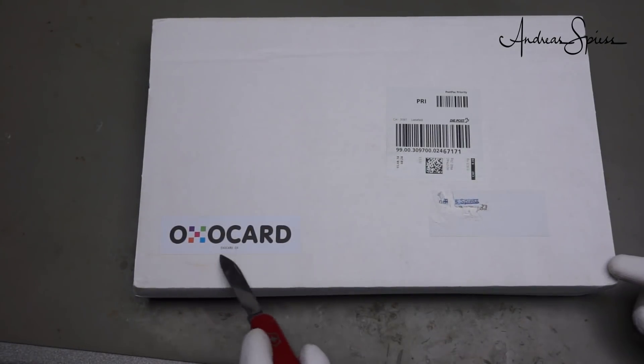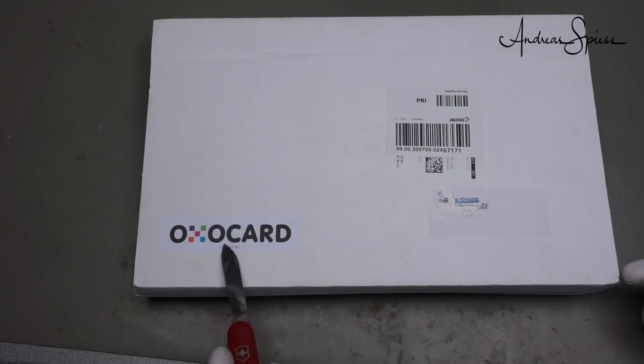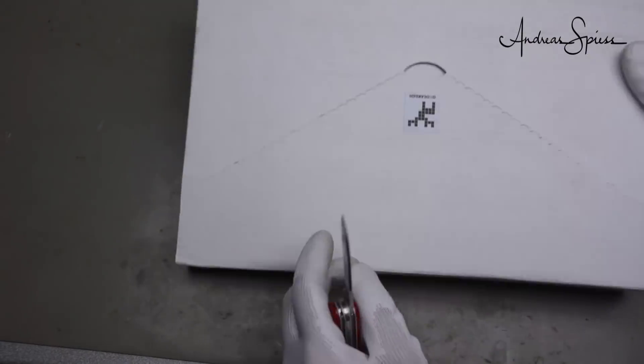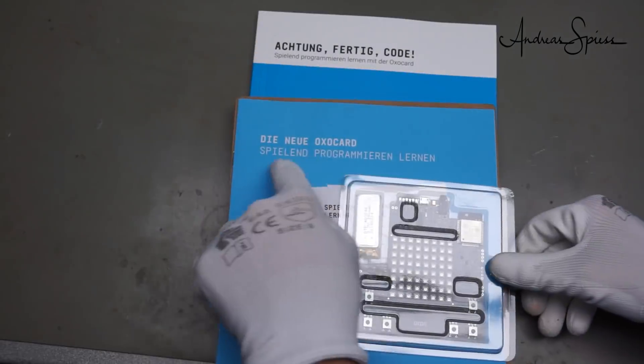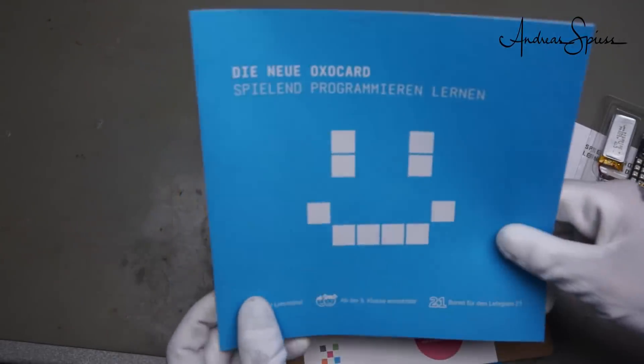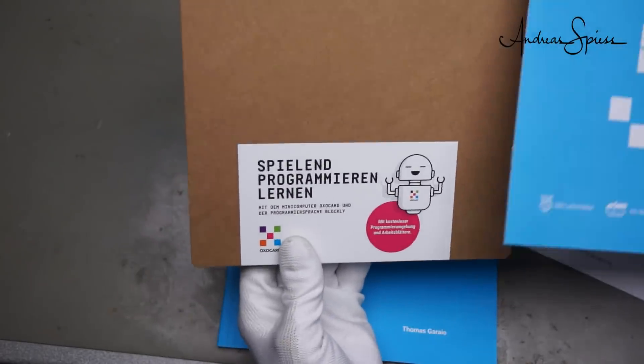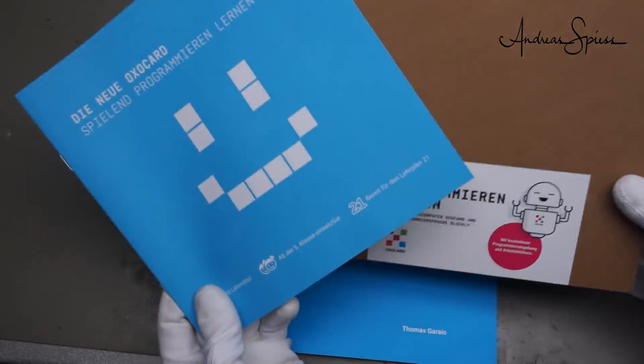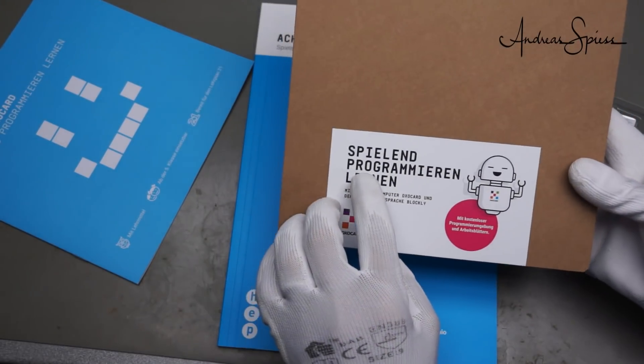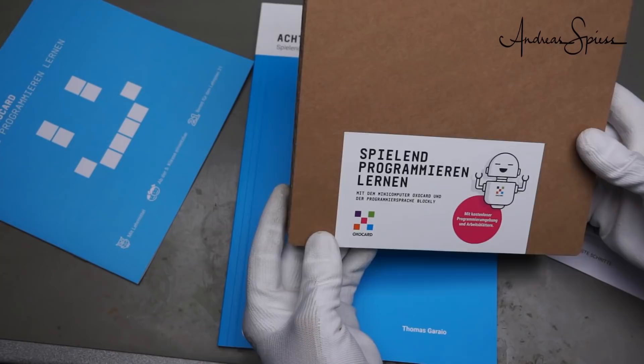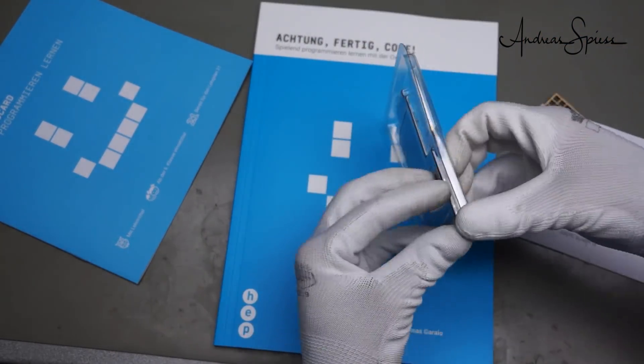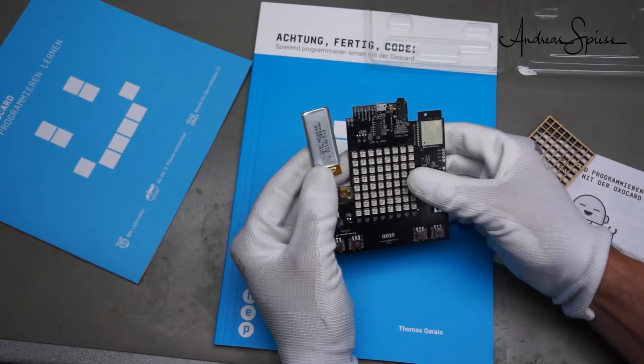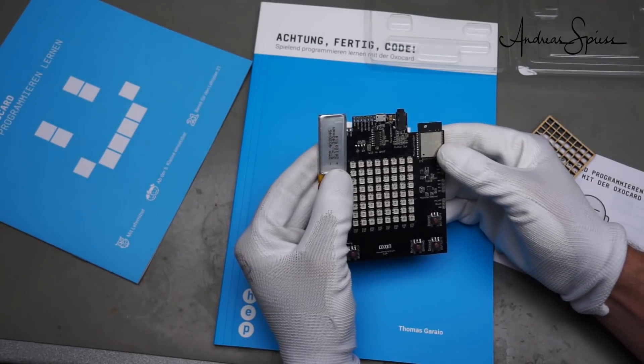Next one comes from a viewer, which is also a very small startup here in Switzerland. It is called OxoCard. So let's have a look inside what they sent me. First, everything is in German. So it's probably not as interesting for the English speaking community. I do not know if they also provide English stuff. But it is a stem system. And it says to learn to program like a game. A nice board with a battery and lots of NeoPixels. And an ESP32, which of course I like.